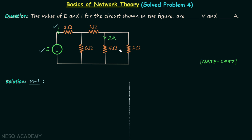The 4 ohm resistor and 1 ohm resistor are in parallel, and it is given that 2 amperes of current is flowing through the 4 ohm resistor. Let's say I1 is the total current entering the parallel combination. From the current divider rule, the current through the 4 ohm resistor — which is 2 amperes — equals I1 multiplied by the other resistance value, which is 1 ohm.